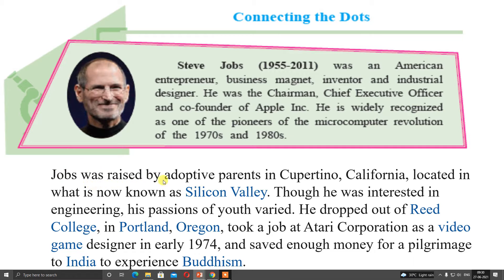Jobs was raised by adoptive parents — that means he was adopted by his parents — in Cupertino, California, located in what is now known as Silicon Valley. Though he was interested in engineering, his passions of youth varied. Generally it happens at this age — passions of youth varied. So he dropped out of Reed College in Portland, Oregon.